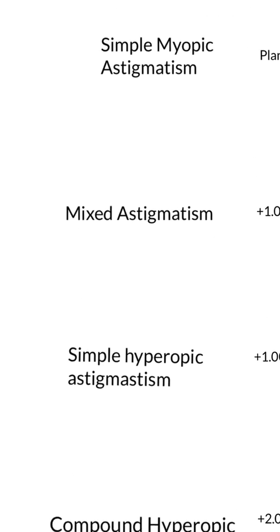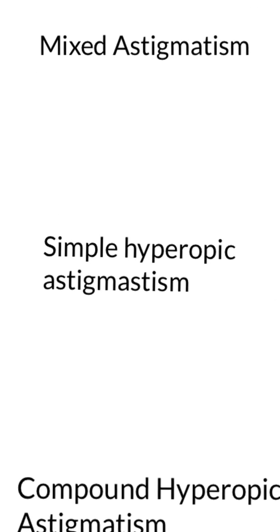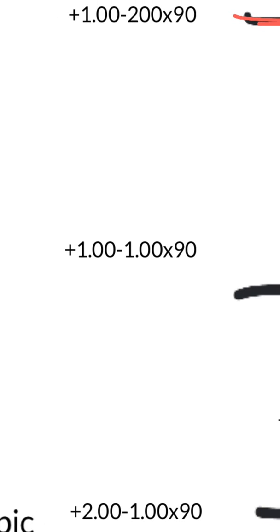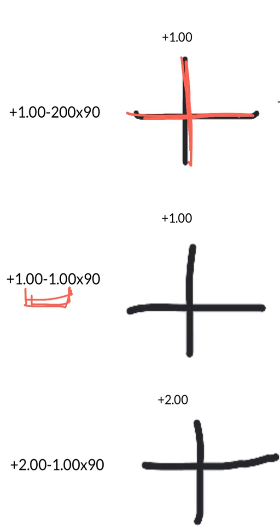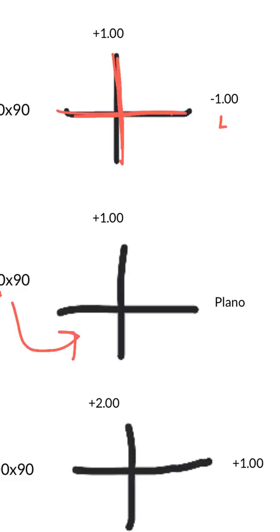The fourth type is simple hyperopic astigmatism. Here's an example prescription. This might look confusing — it may seem like mixed astigmatism because you have a positive and a negative number. But you have to look at the optical cross. When you draw it out, you have plano on the horizontal meridian and a plus on the vertical meridian. That's simple hyperopic astigmatism.